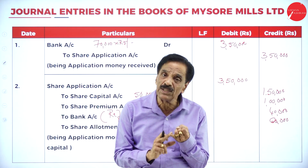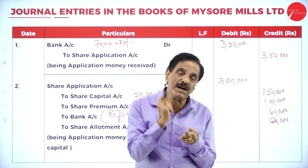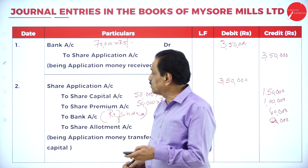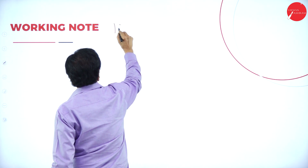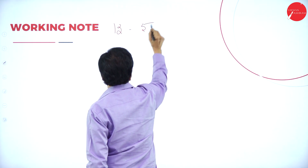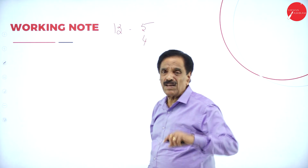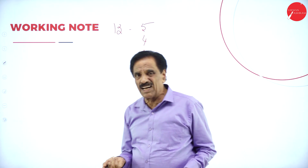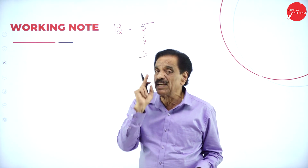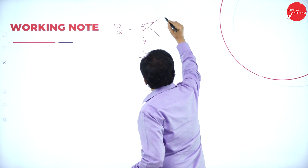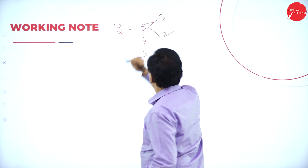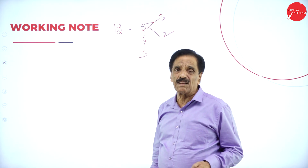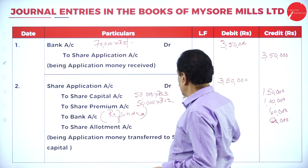To summarize the payment schedule: ₹5 on application (₹3 real + ₹2 premium), ₹4 on allotment, ₹3 on the call — totalling ₹12 per share. Third entry for allotment due: Share Allotment Account Dr ₹2,00,000 — To Share Capital Account ₹2,00,000. Then for receipt: Bank Account Dr ₹1,40,000 — To Share Allotment Account ₹1,40,000 (since ₹60,000 was already received).